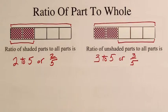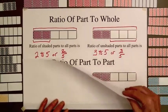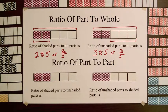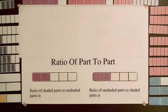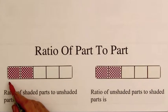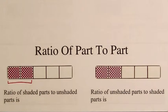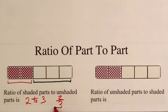We can also compare the number of shaded parts and the number of unshaded parts. Let's look at that. The ratio of the number of shaded parts, 2 in this case, to the number of unshaded parts is 2 to 3, or 2 thirds.